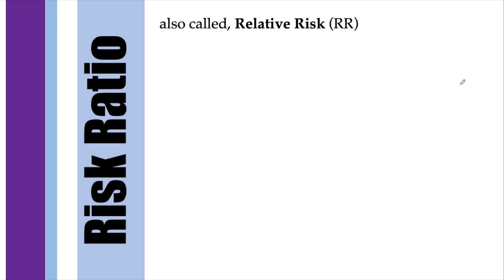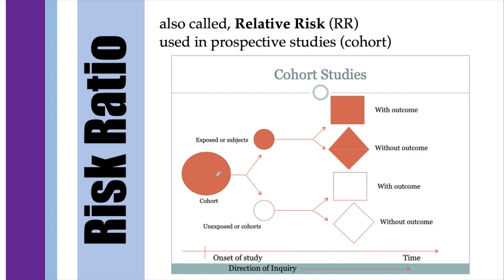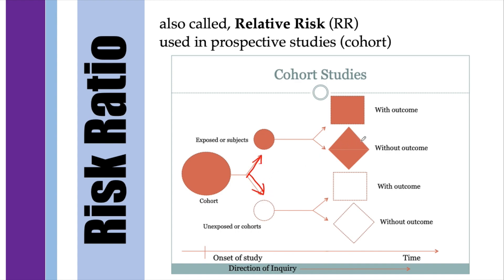What is risk ratio? Risk ratio is simply the ratio of two risks, also called relative risk. These are used in prospective studies. Suppose you have a cohort — a group of people you are going to observe over a specific period of time. Some of them will be exposed and some will not. After a certain period of time, you measure how many of the exposed individuals have the disease.